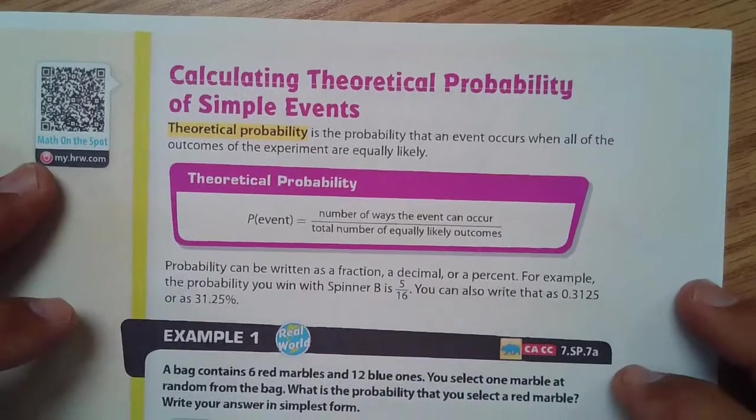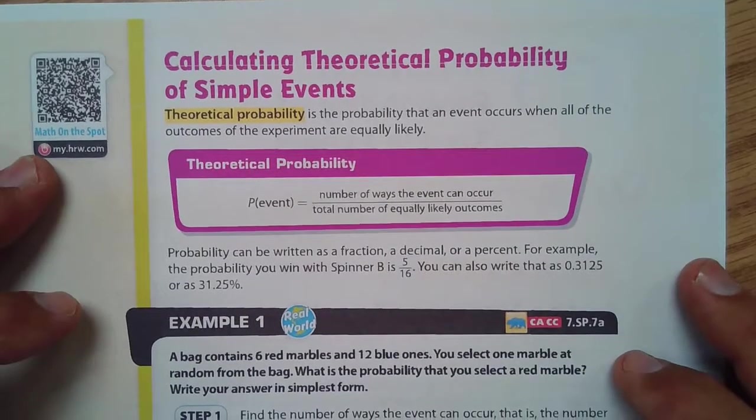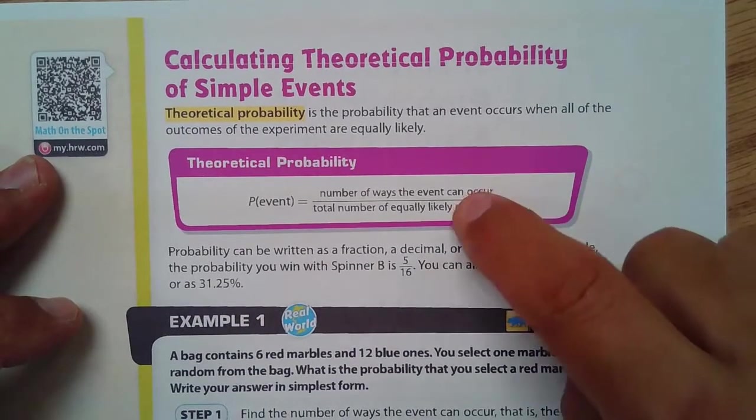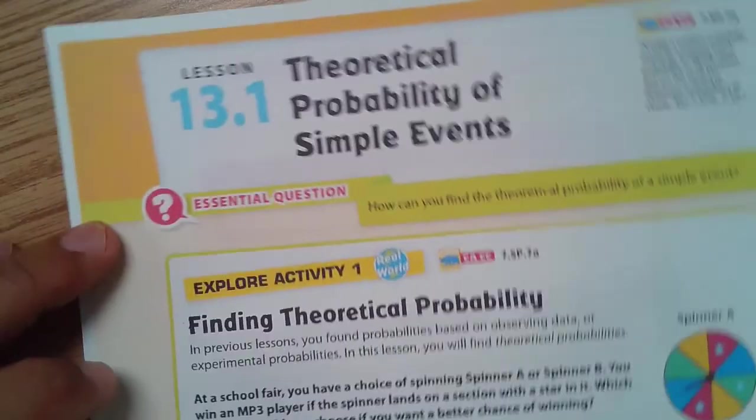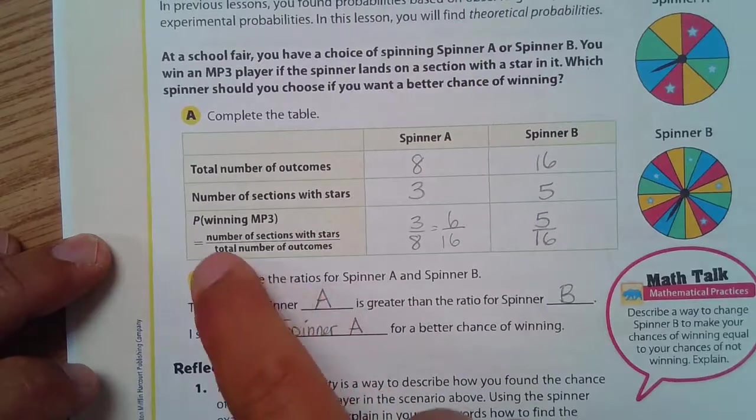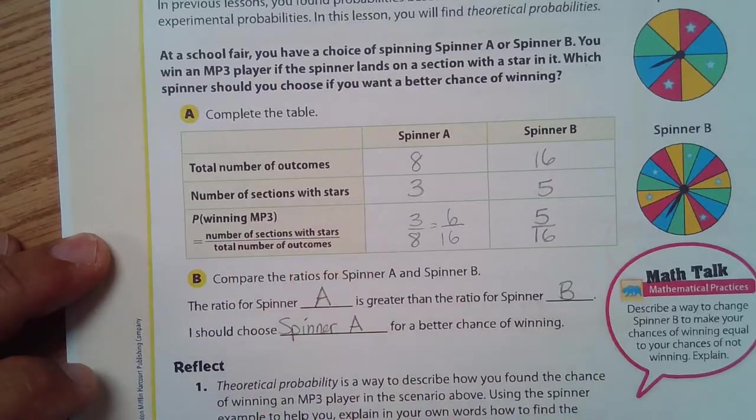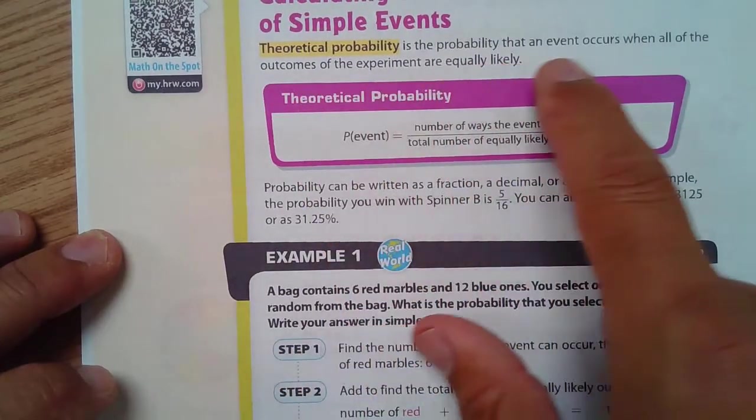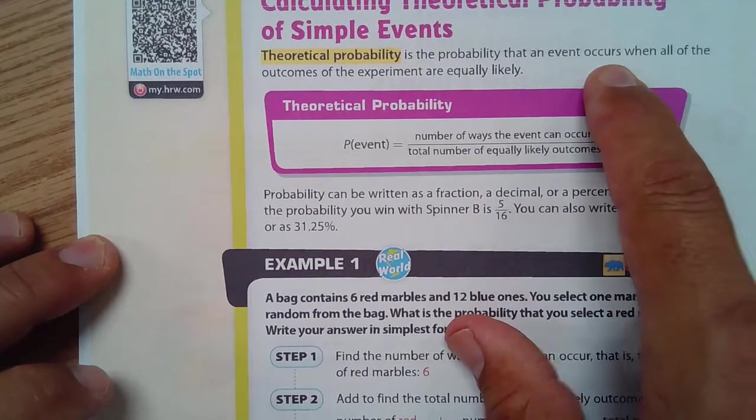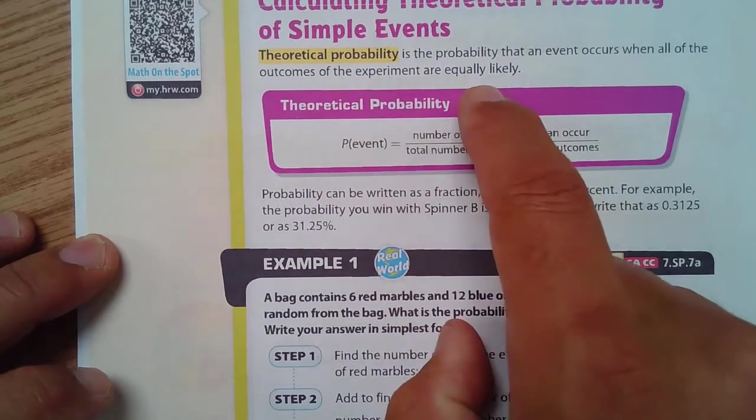Next, we're going to calculate theoretical probability of simple events. And this comes back to what was just going on in our explore activity here. And this fraction right here is generalized as the theoretical probability is the probability that an event can happen when all of the outcomes of the experiment are equally likely.